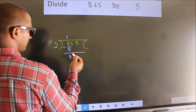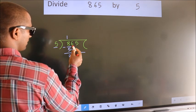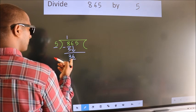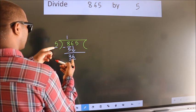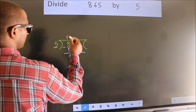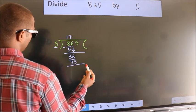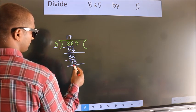After this, bring down the beside number. So, 6 down. So, 36. A number close to 36 in 5 table is 5 7s 35. Now, we subtract. We get 1.